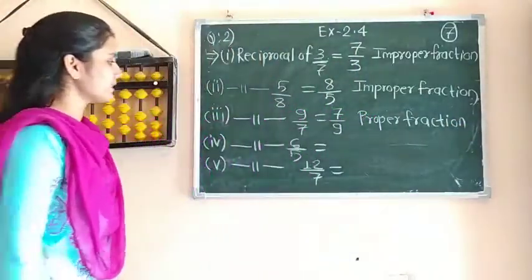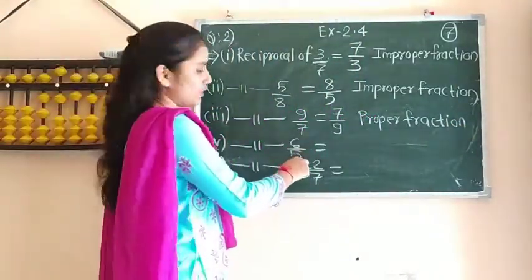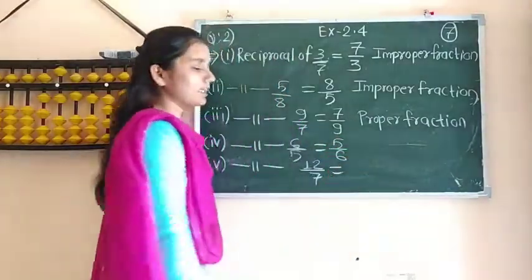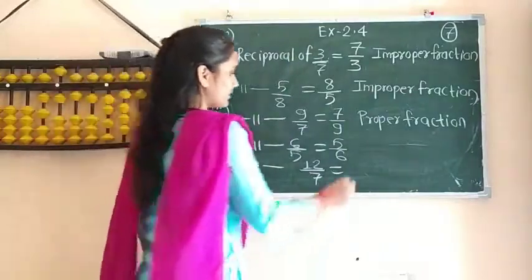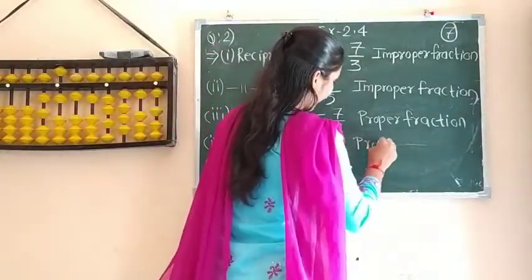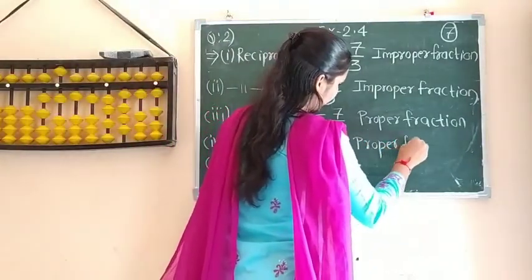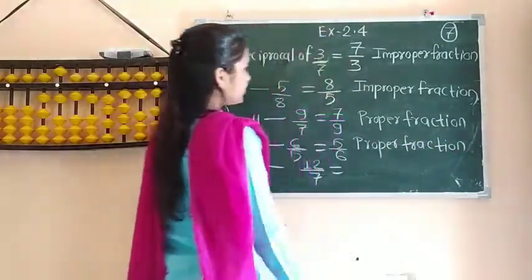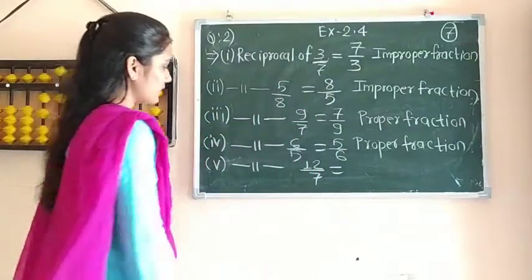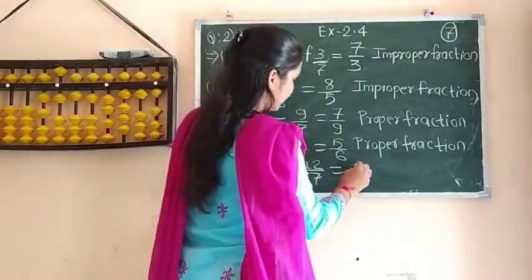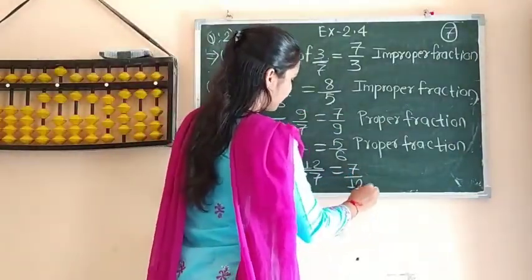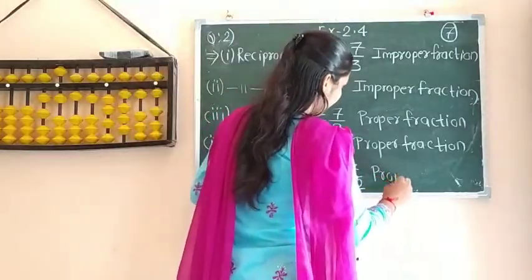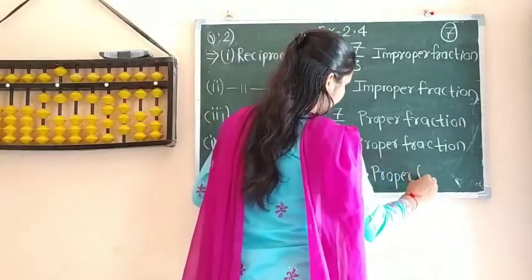Next, 6 by 5 — its reciprocal is 5 by 6. The numerator is smaller than its denominator, so it is a proper fraction. Next is 12 by 7, whose reciprocal is 7 upon 12, which is also a proper fraction.